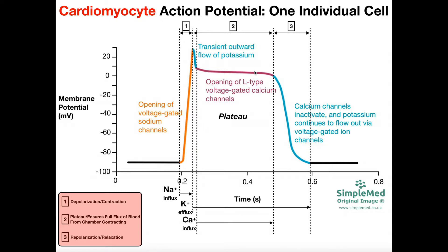This plateau is due to the fact that for every potassium that effluxes, you have a calcium that influxes — so the two are balanced. But there comes a time when the calcium channels close while the potassium channels are still open. If the calcium channels inactivate and potassium channels remain open, potassium continues to efflux out and the inside of the cell becomes more negative. So we have repolarization, in which the membrane potential goes back to approximately negative 90 millivolts. Assuming activation via another pacemaker cell, we'd then have another action potential.